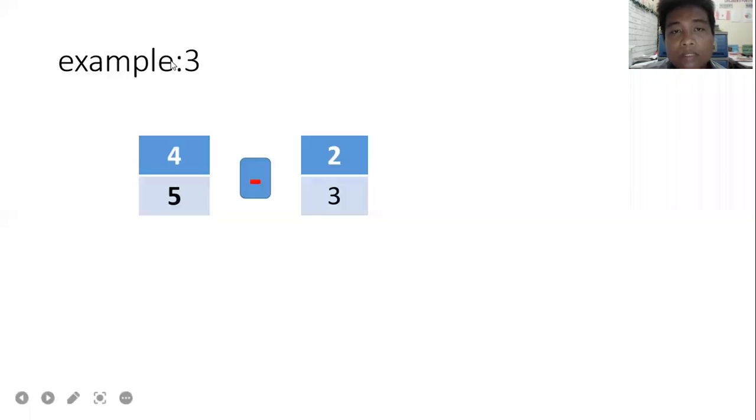Example 3 continued: Five times three equals fifteen. Check if it's divisible. Use 15 as LCD.